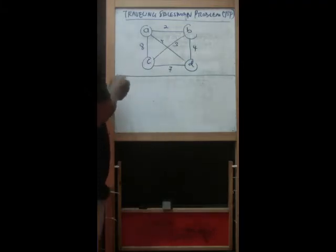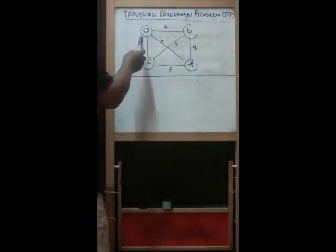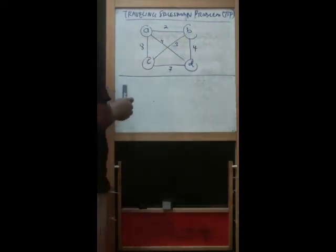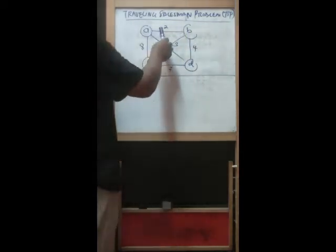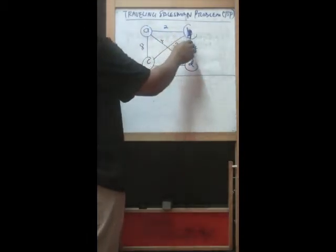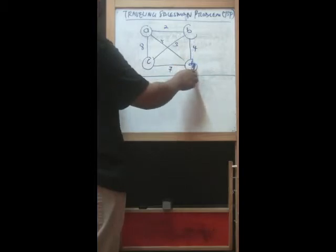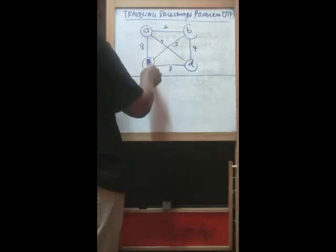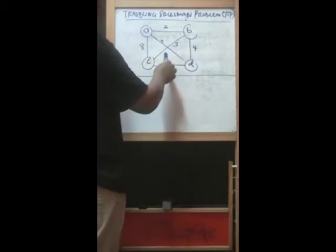To make it simple, let's use this example. We have A, B, C, D here as cities, only four cities, with weights for each. The distance A to B is 2, B to D is 4, D to C is 7, A to C is 8, A to D is 5, and B to C is 3.